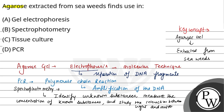Now, see the question again. The question says agarose — it can be used in gel electrophoresis, in spectrophotometry, in tissue culture, or in PCR.